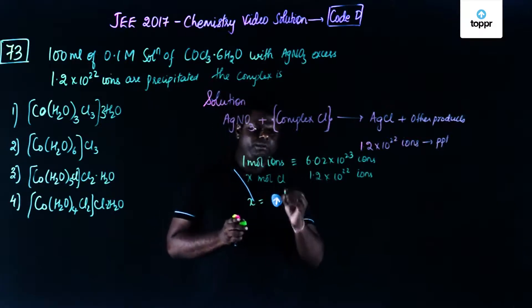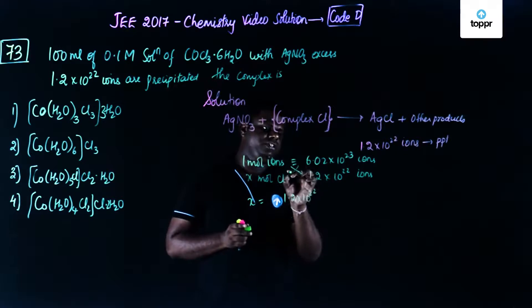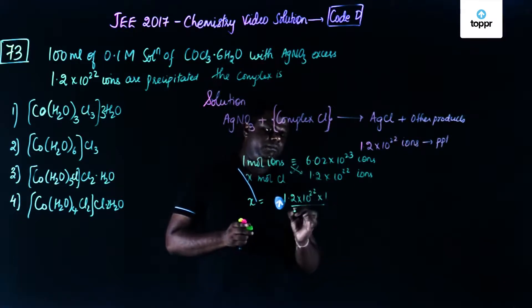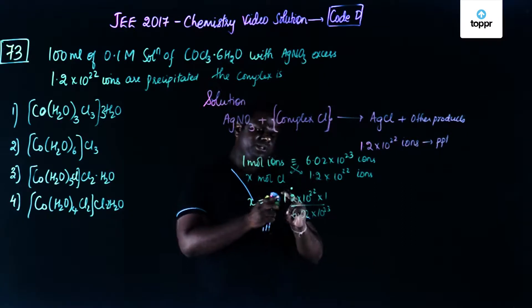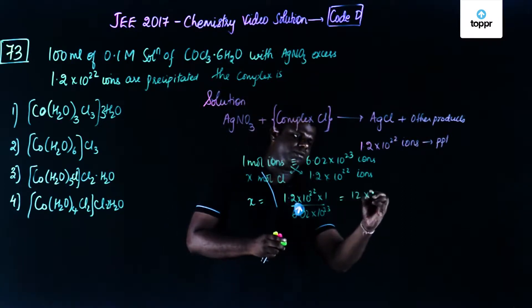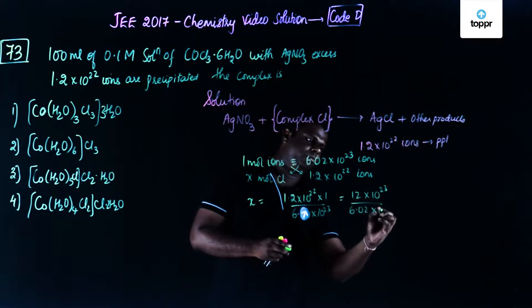You have to calculate x. x will be equal to 1.2 into 10 to the power 22, just do the cross multiplication, multiplied by 1 divided by 6.02 into 10 to the power 23. So now I'm just going to shift the decimal on the other side. I'll be getting 12 into 10 to the power 23 divided by 6.02 into 10 to the power 23.